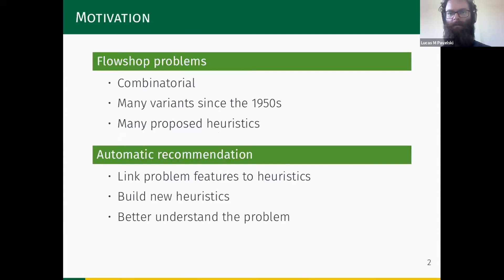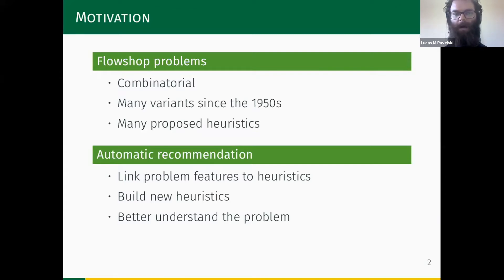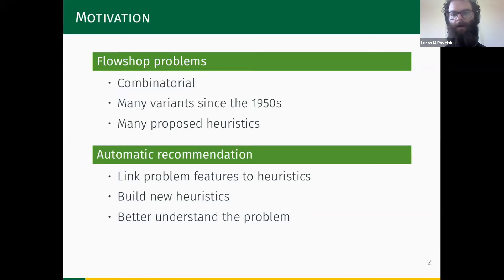Our base problems are flow shop problems — combinatorial optimization problems studied since the 1950s. There are many variants of this problem and, since it's a classical problem, many proposed heuristics to solve it. Algorithm recommendation aims at finding the best strategy to solve a given problem by linking problem features to heuristics, building new heuristics for unseen problems, and better understanding the problem.